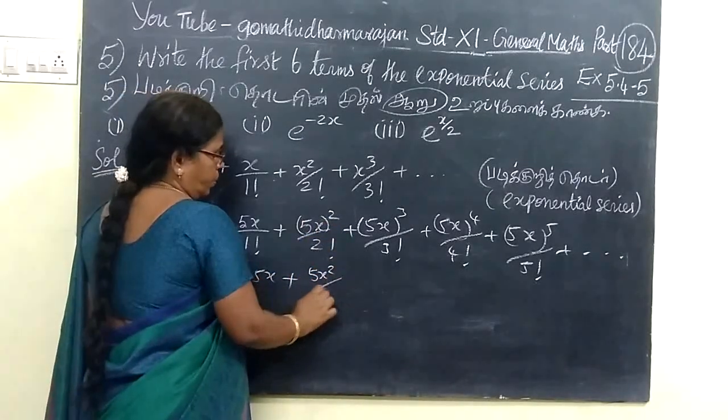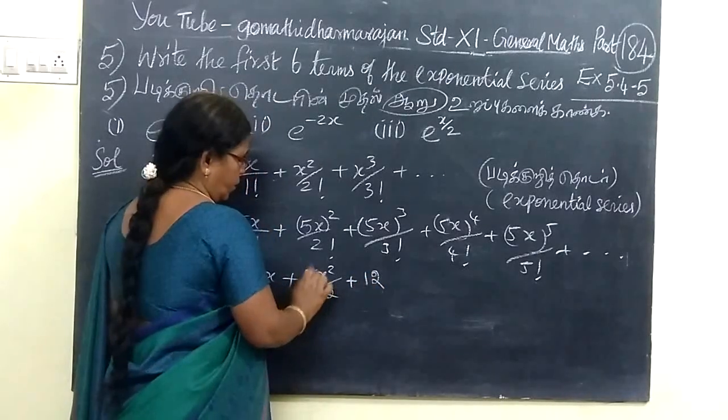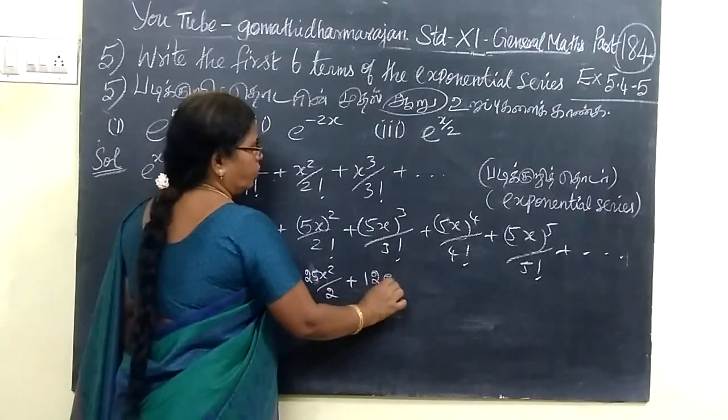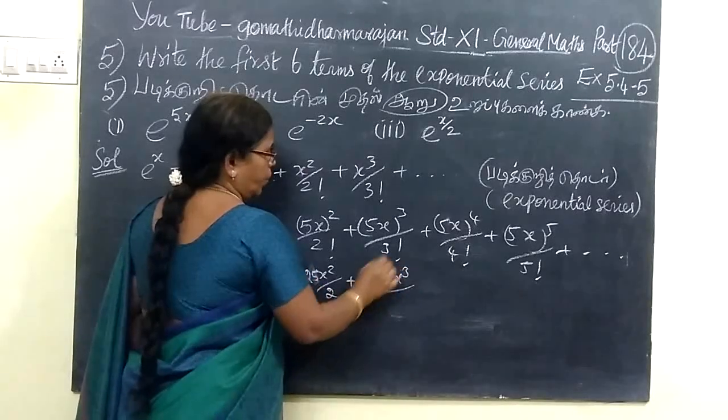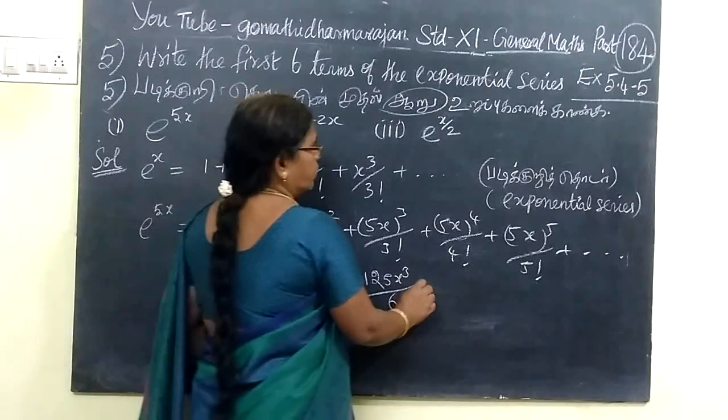5x squared by factorial 2. Then 5x cubed, that means, sorry, 25 x squared. So, 1 times 25. Then by 2. So factorial 3, then 3 into 2 into 1, that is 6.